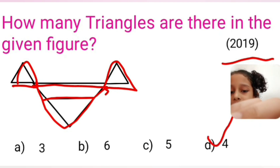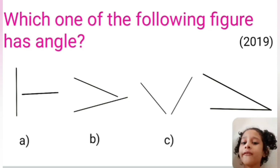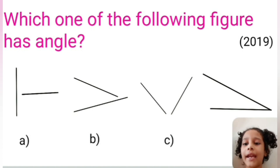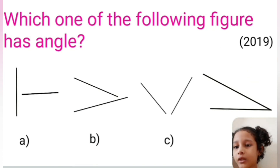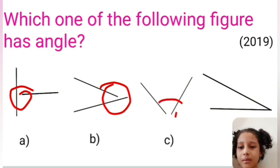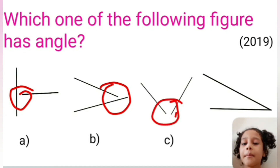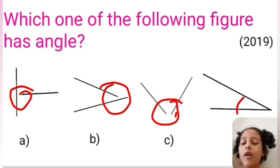Which one of the following figures has an angle? When an angle is formed, two lines are joined and they make an angle. Option A: two lines are not joined. Option B: two lines are not joined. Option C: two lines are not joined. But option D: two lines are joined. So option D is our correct option.